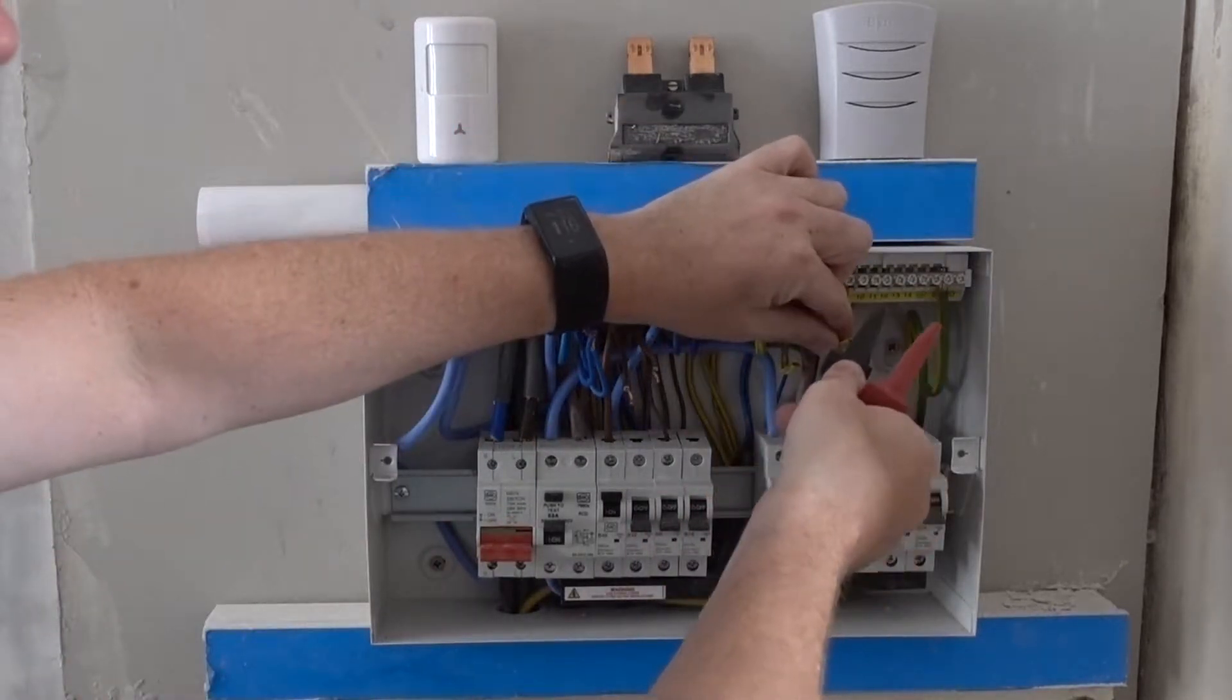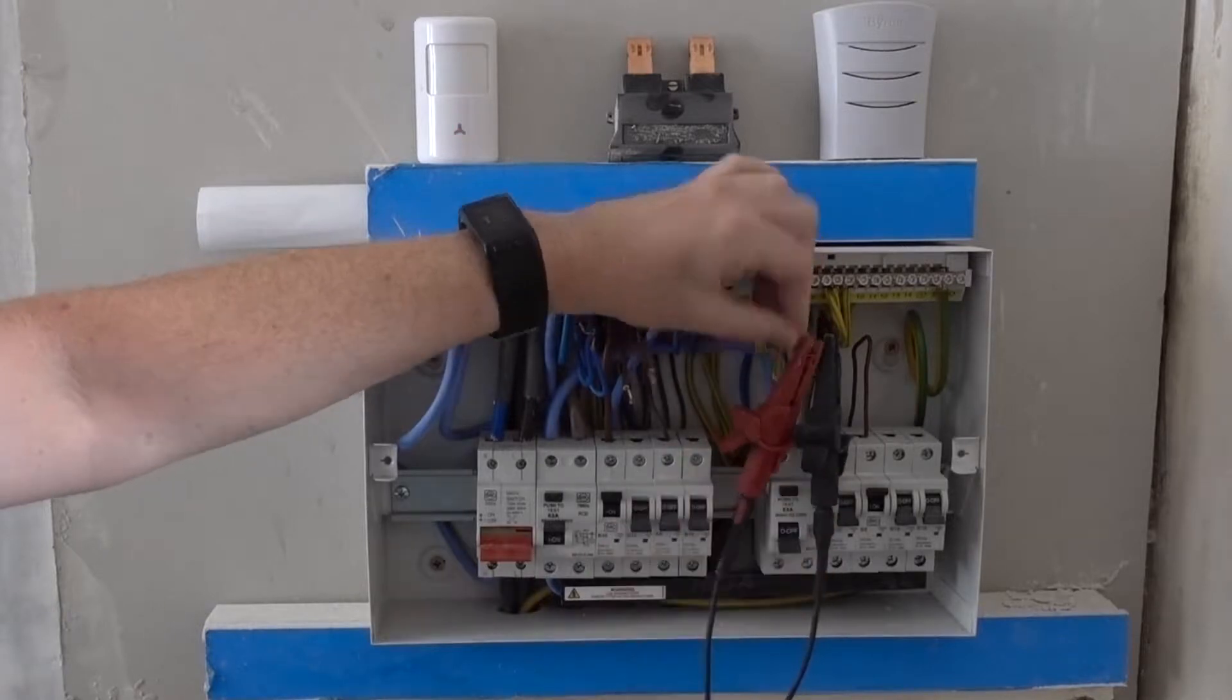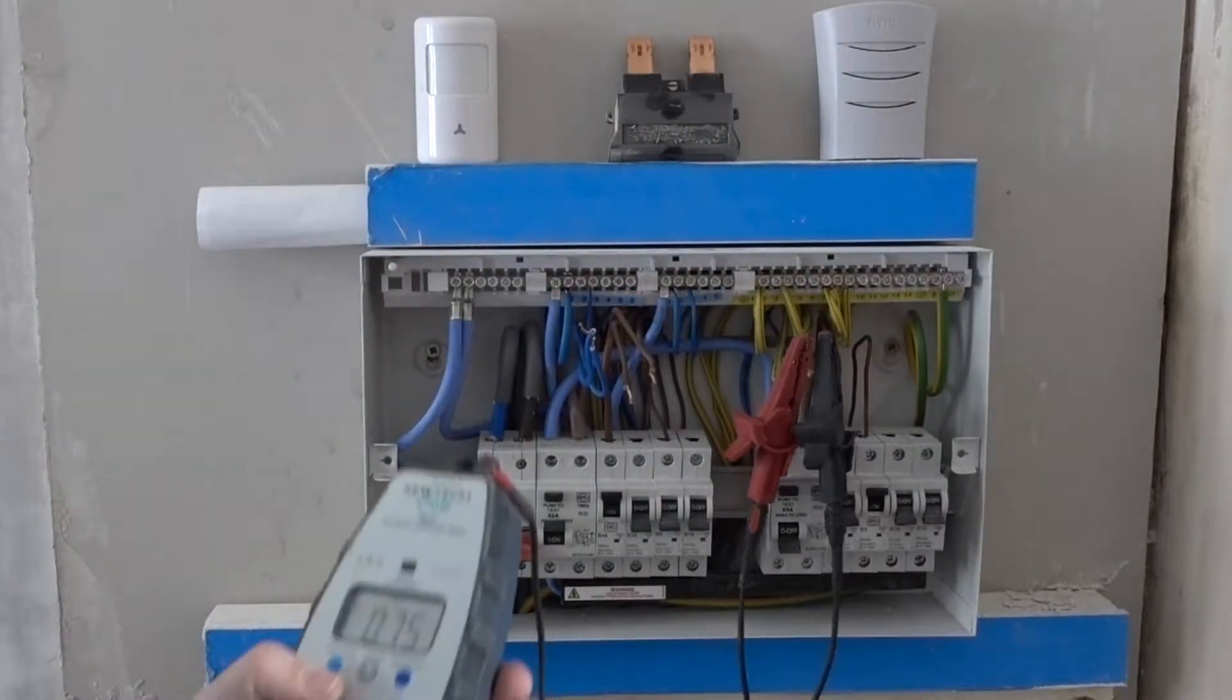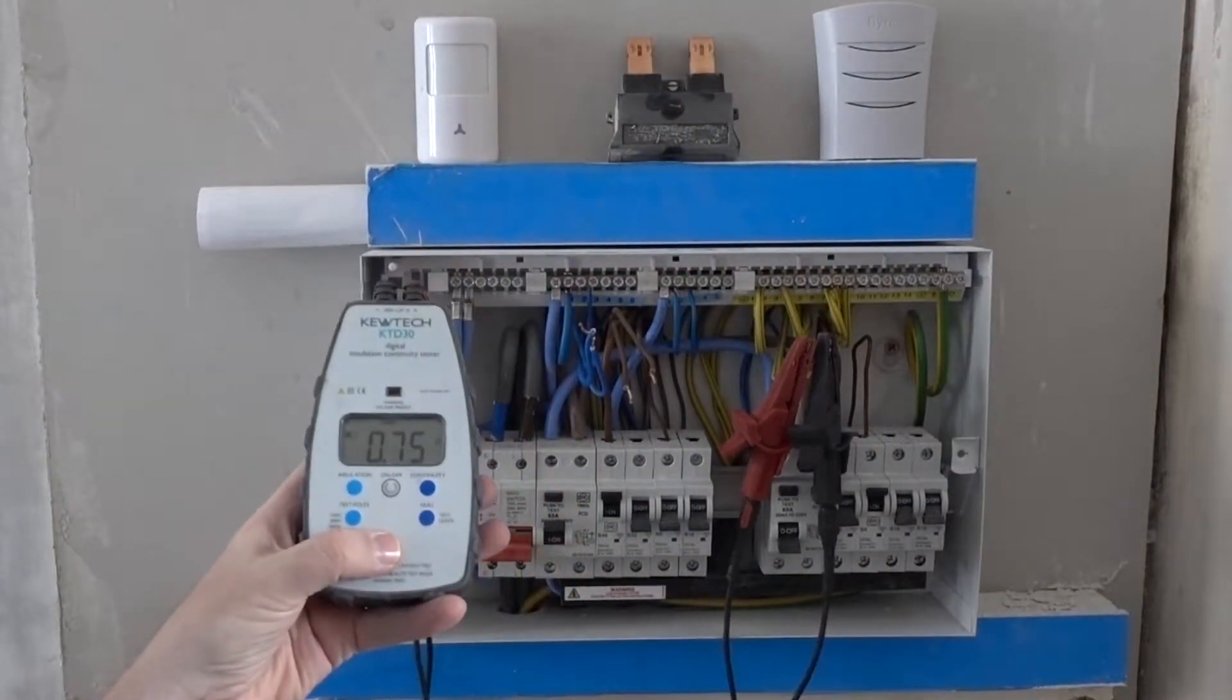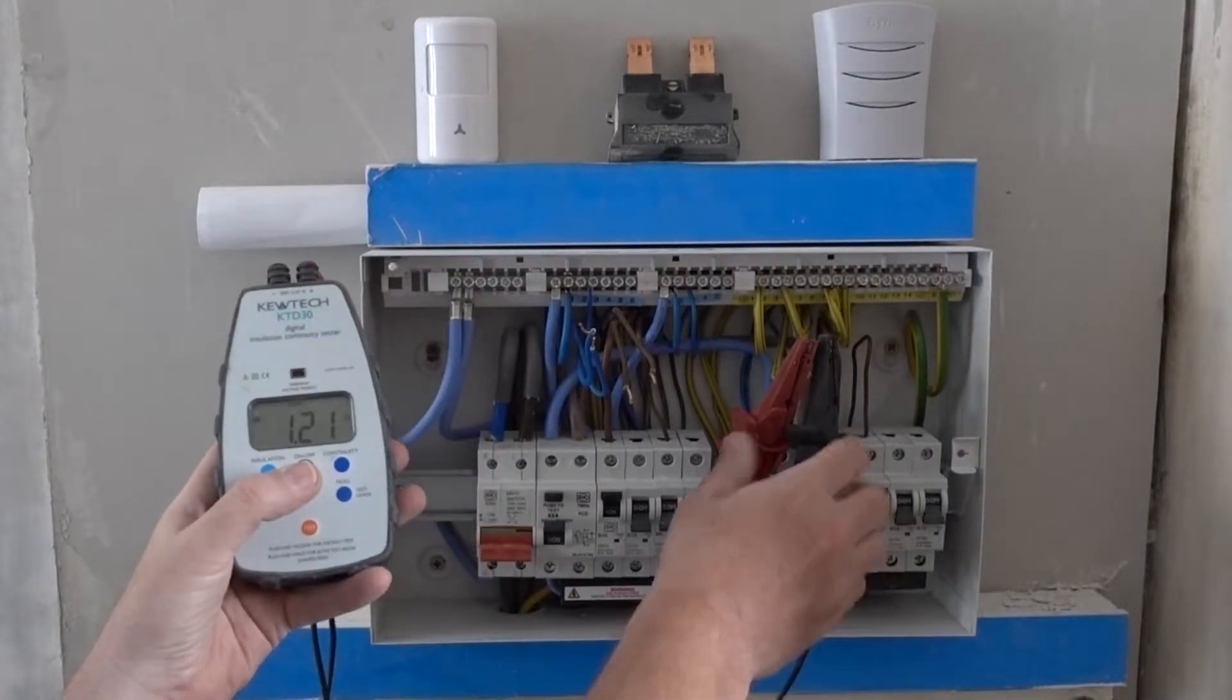And then let's just test continuity on the earth, the protective circuit. This is obviously a smaller wire. So we're expecting just a bit under double. So yeah, 1.21. That's exactly what we'd expect.